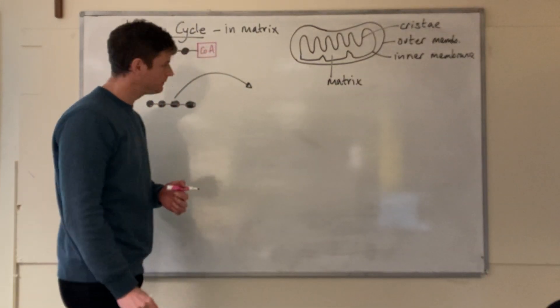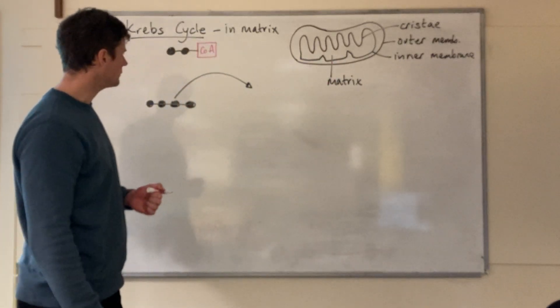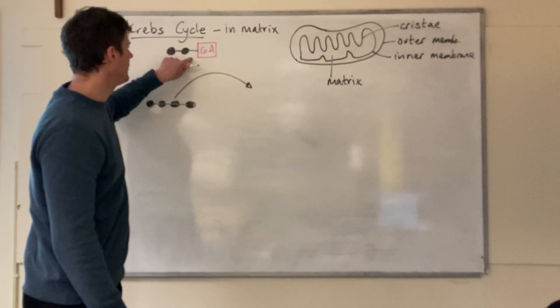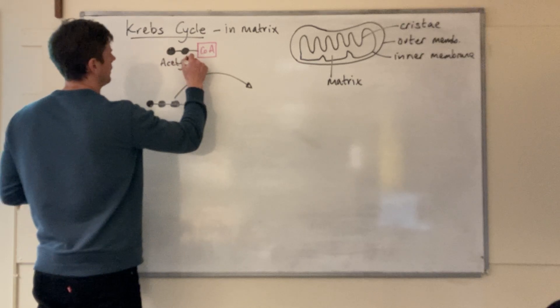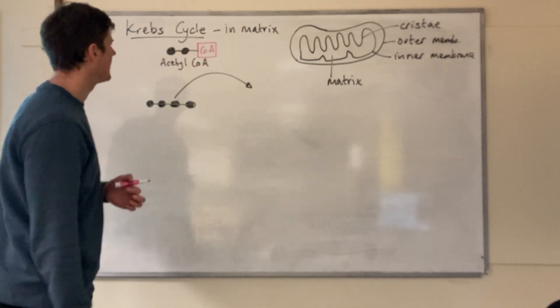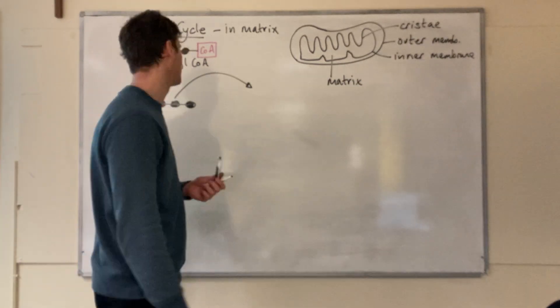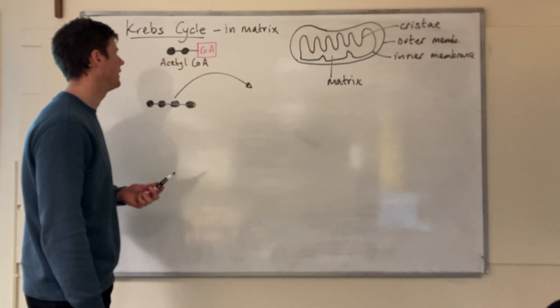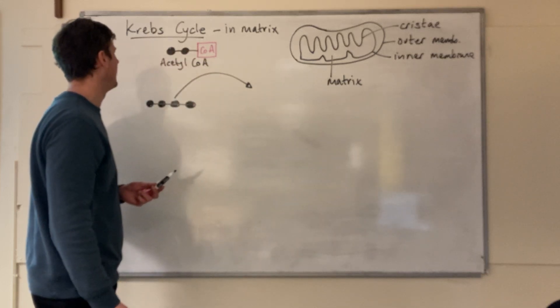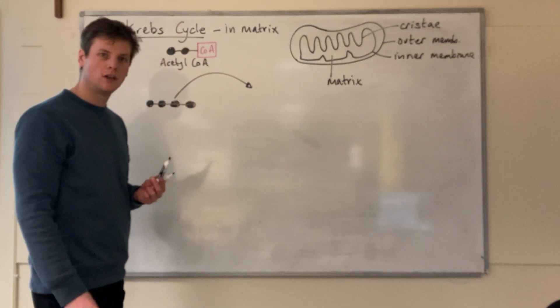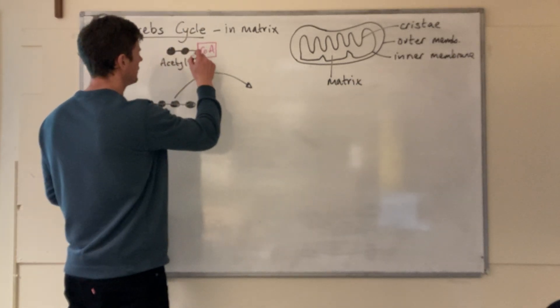Like the link reaction, this is occurring in that matrix. If you remember from the link reaction, at the end we produced this molecule called acetyl-CoA. The coenzyme part of that acetyl-CoA acts a bit like a taxi service. It collects acetate and then drops it off at the Krebs cycle before going on to pick up more acetate molecules.